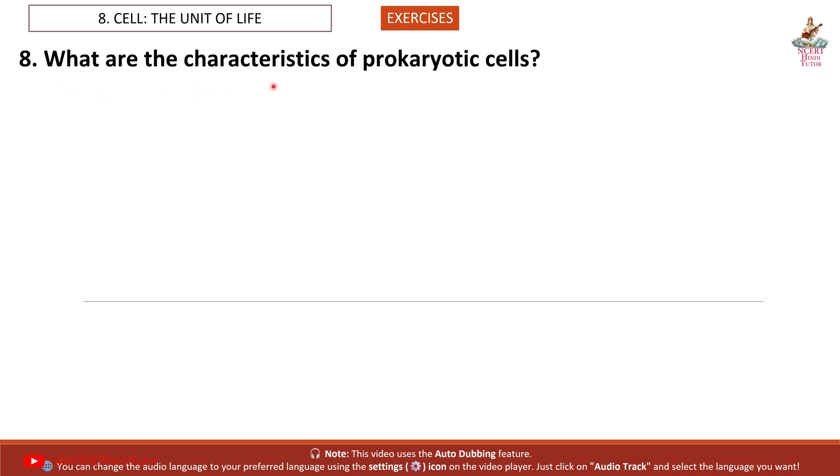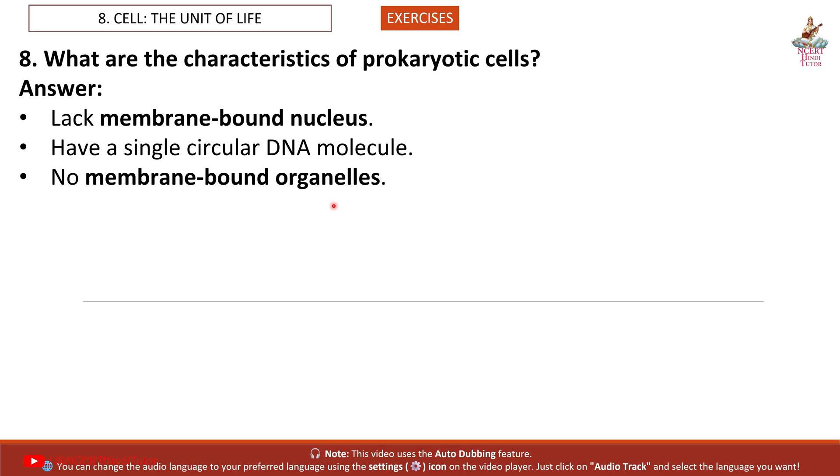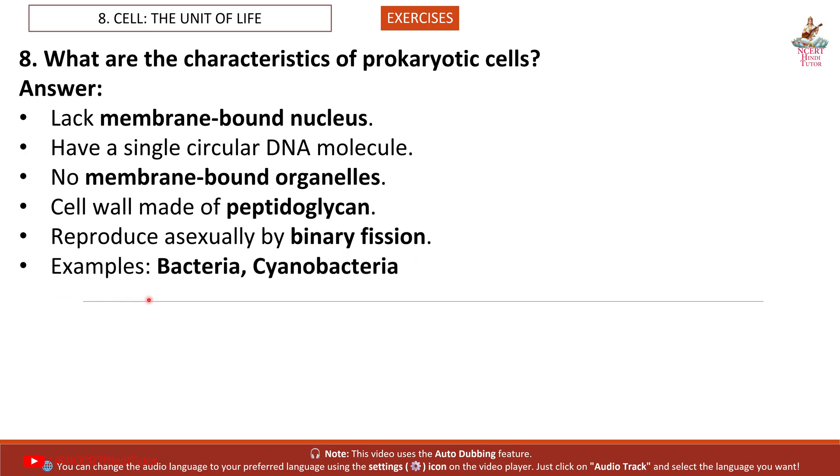Question 8: What are the characteristics of prokaryotic cells? Answer: Lack membrane-bound nucleus. Have a single circular DNA molecule. No membrane-bound organelles. Cell wall made of peptidoglycan. Reproduce asexually by binary fission. Examples: bacteria, cyanobacteria.